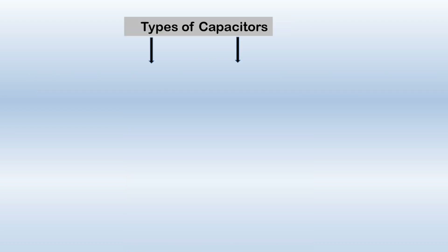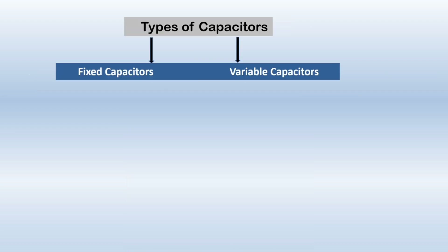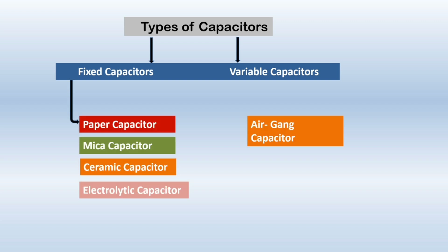We have two types of capacitor: fixed capacitor and variable capacitor. In fixed capacitors we have paper capacitor, mica capacitor, ceramic capacitor, and electrolytic capacitor. In variable capacitors we have air gang capacitor and trimmer capacitor. Out of these fixed capacitors, the electrolytic capacitor is a polarized one.